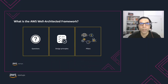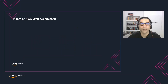The Well-Architected Framework provides a set of questions and design principles across five pillars. The five pillars form the foundation for building well-architected solutions or workloads on AWS. When you incorporate these pillars, it will help you produce stable and efficient systems, allowing you to focus on functional requirements.